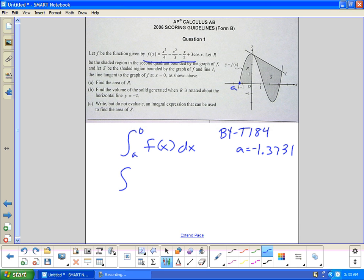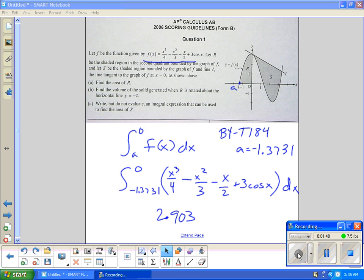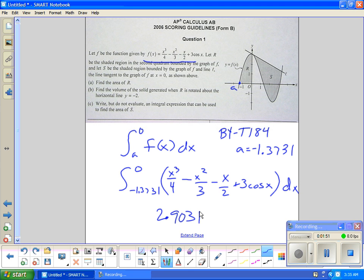So now I have to do the integral from negative 1.3731 to zero of x cubed over 4 minus x squared over 3 minus x over 2 plus 3 cosine x dx. Now I can use this in my calculator so I inputted it and I've got a value of 2.903 for three decimal places. The fourth decimal place is a one. And that would be the answer to the first problem, letter A.